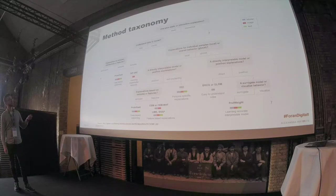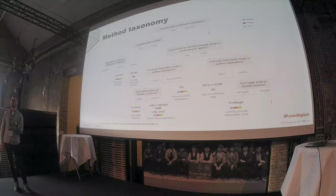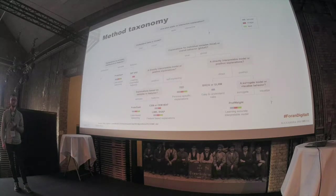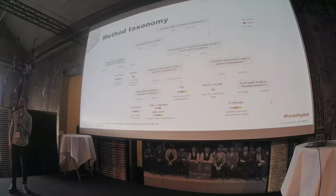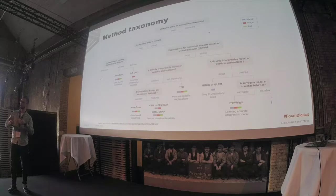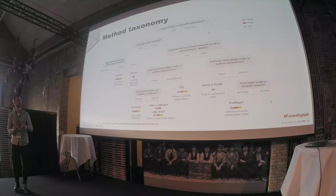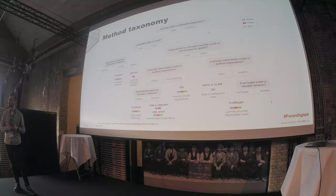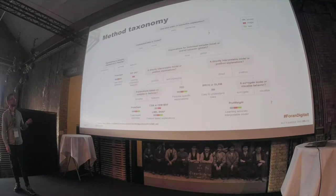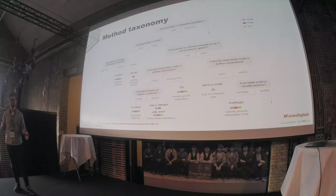Starting at the top, the first division is between static and interactive explanations. An interactive explanation would be something like a chatbot where you can ask further questions once you get an explanation. As far as I know, there is currently no method that does that — all of them are kind of static: they generate one explanation and that's it, you don't get more information than that.